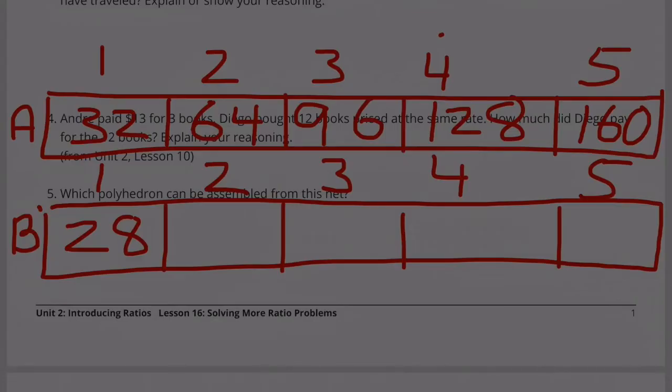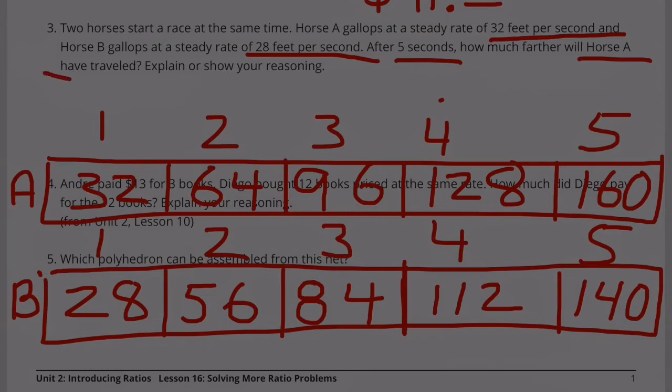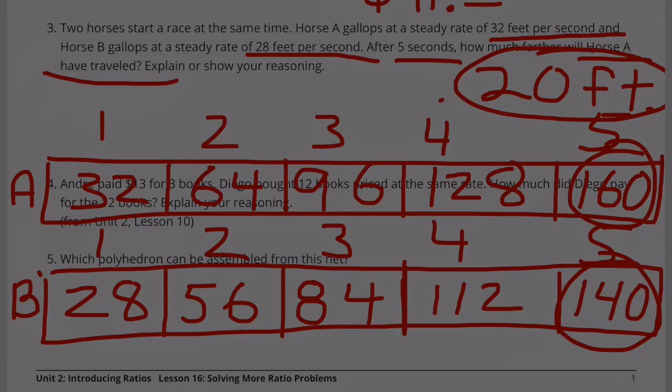Horse B, we're counting by 28. 28 plus 28 is 56. 56 plus 20 is 76. 76 plus 8 should be 84. 84 plus 20 is 104. Plus 8 more is 112. 112 plus 28. 112 plus 20 is 132. 132 plus 8 should be 140. After 5 seconds, horse B would travel 140 feet. If horse A traveled 160 feet and horse B only traveled 140 feet, that means horse A traveled 20 feet more. Horse A traveled 20 feet more in 5 seconds than horse B.